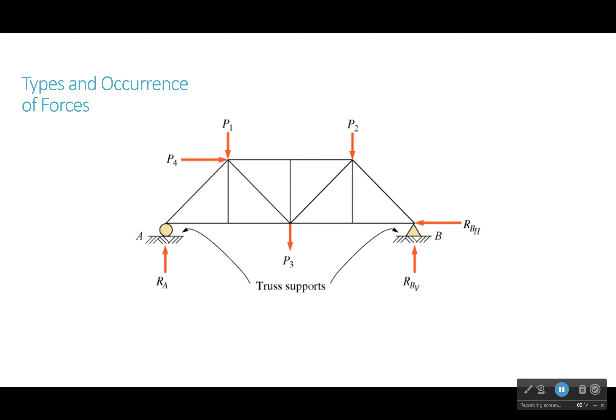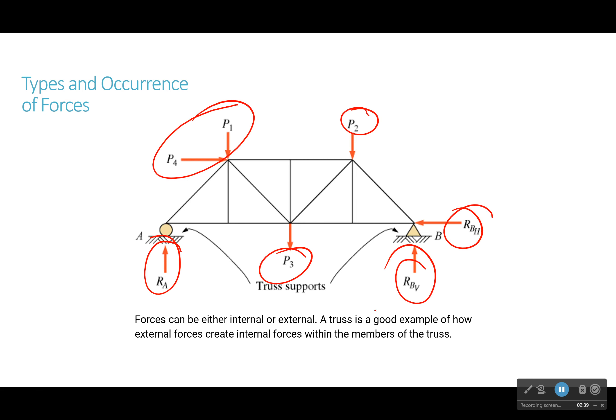Okay. Types and occurrences of force. Forces can be internal or external. Truss is a really good example of this, because external forces will create internal forces within the members of the truss. We have these external forces. I am pulling on it right here and here and here. And then there are reaction forces. The ground pushes back, the ground pushes back here, the ground pushes back here and here.